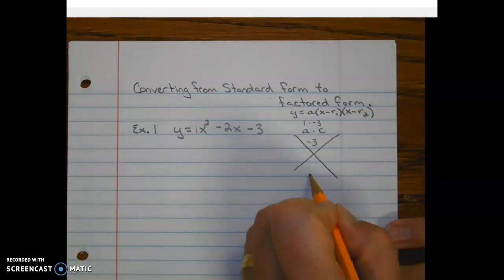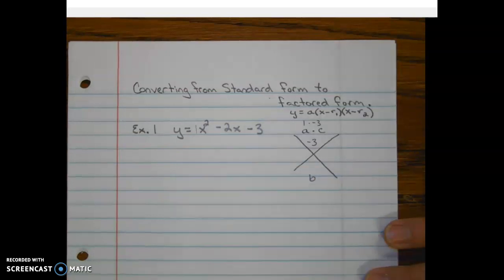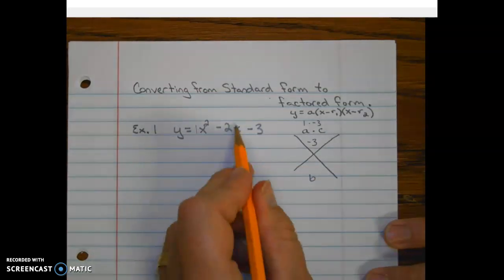Then we go to the bottom and we place our B value in the bottom section, which is negative 2.